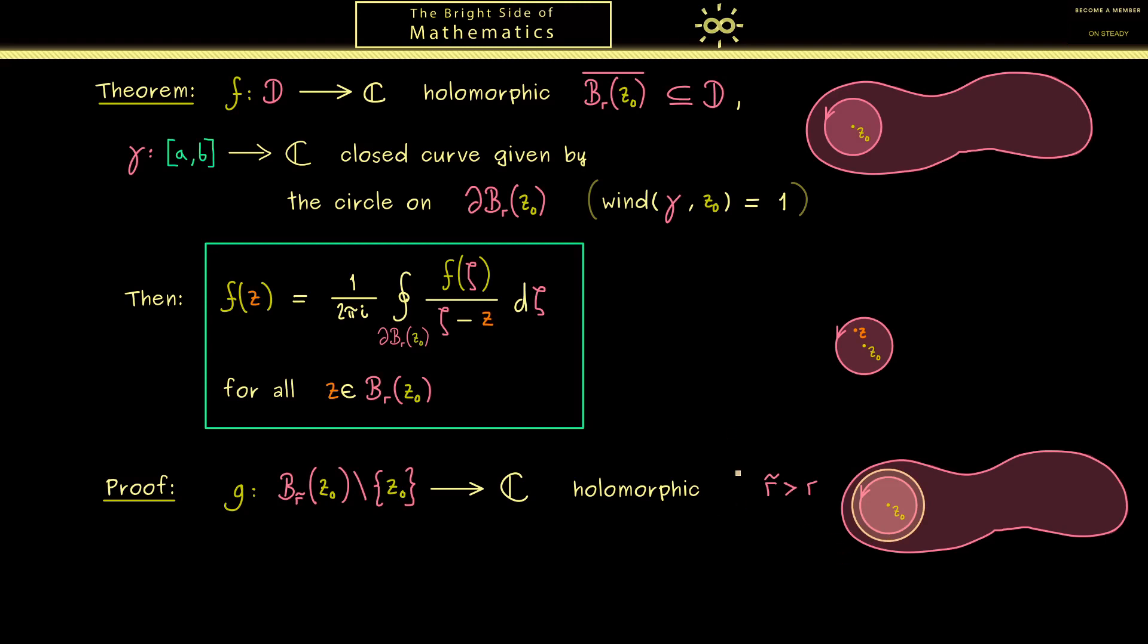Of course, this is always possible because the assumption said that the closure of the disk lies completely in D. Therefore, inside the open set D, it's possible to enlarge the disk a little bit. Okay, now the only question that remains is what is the definition of this new function g. And of course the answer is not a surprise at all because we see the function already in the integral. Hence a point zeta is sent to the number f(zeta) divided by (zeta minus z). And by having this, you should also see that the exception point here is not the midpoint z_0, but rather the arbitrarily chosen point z. So let's also change that and then the definition of the function g is complete.